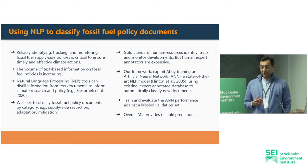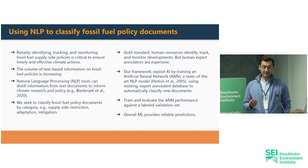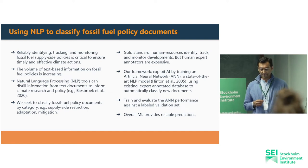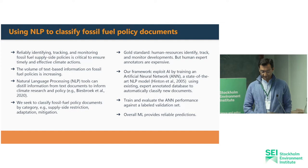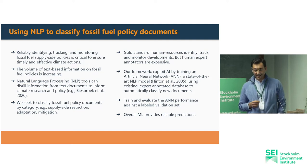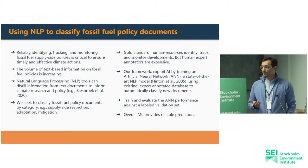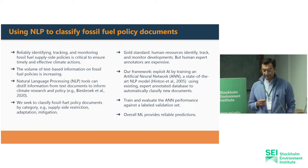Ideally, human annotators would monitor new policy developments around the globe. But human annotators are expensive and there are other pressing tasks requiring human intelligence. Instead, in our project, we trained an artificial neural network or ANN — an NLP model — to automatically classify new documents to assist researchers, policy makers and representatives of civil society in their policy tracking and monitoring workflow.